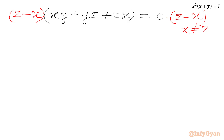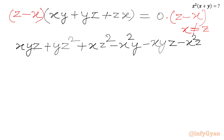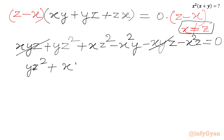Now we expand the LHS. We get xyz plus yz squared plus xz squared minus x squared y minus xyz minus x squared z equal to 0. The xyz and minus xyz cancel, leaving yz squared plus xz squared minus x squared y minus x squared z equal to 0.